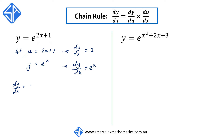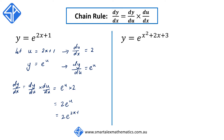dy/du is equal to e to the power of u. So then applying the chain rule, dy/dx, which is equal to dy/du times du/dx, will be equal to e to the u times 2, which is equal to 2 times e to the u. Substituting back in, we get 2 times e to the power of 2x plus 1.